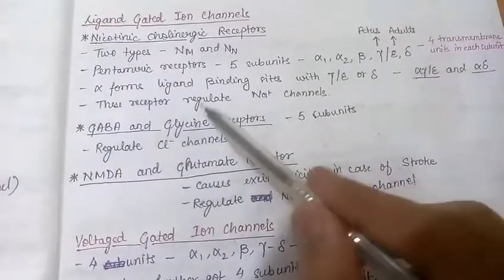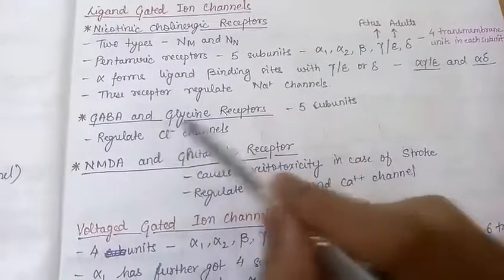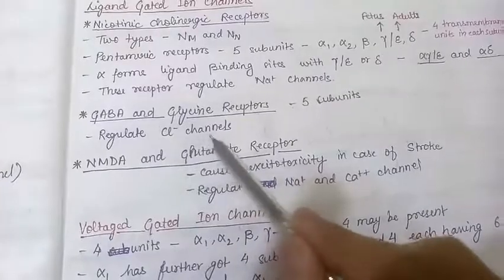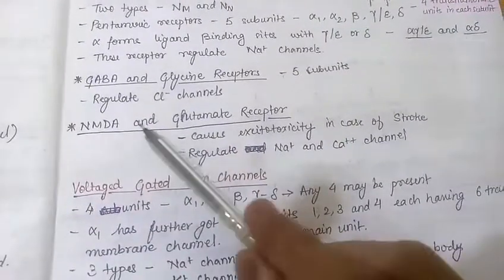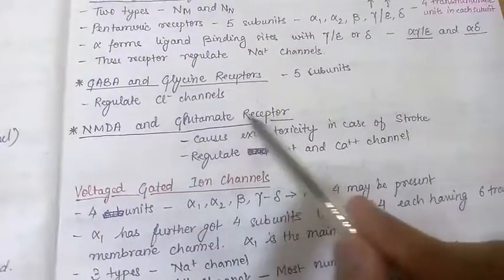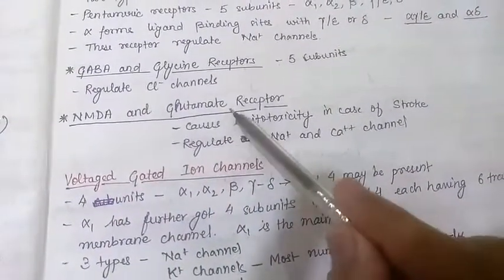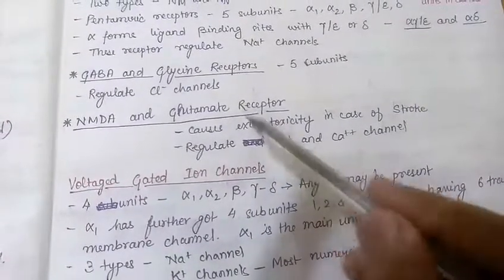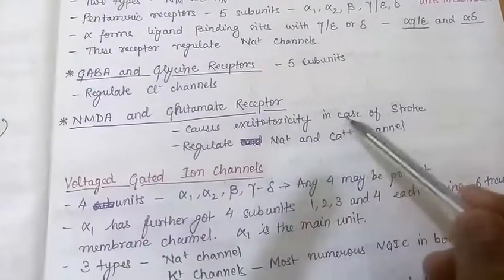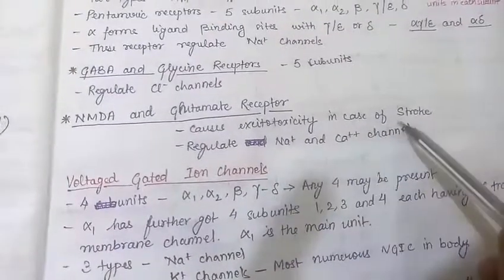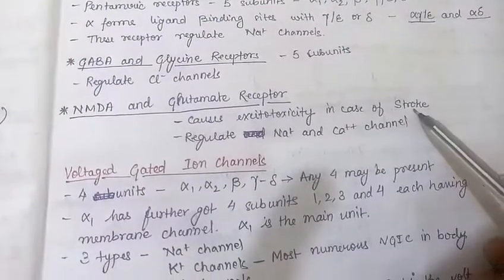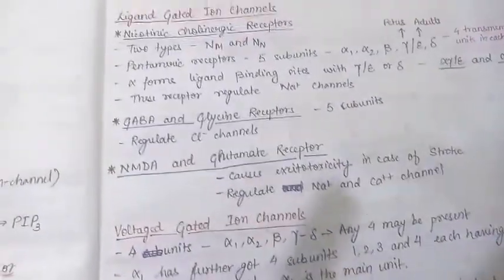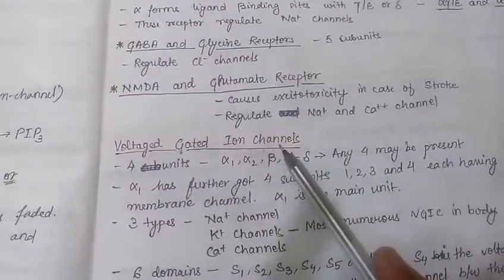The next is the GABA and glycine receptor — it has five subunits and regulates chloride channels. The next one is the NMDA and glutamate receptor, which regulates sodium and calcium channels. Sometimes it also causes excitotoxicity in the case of a stroke, which we will discuss later.